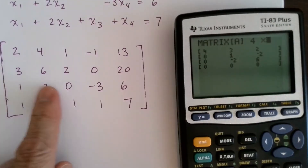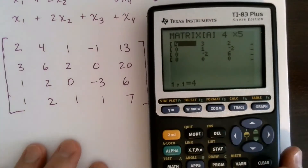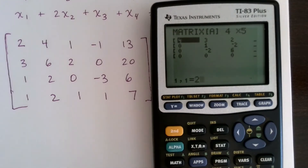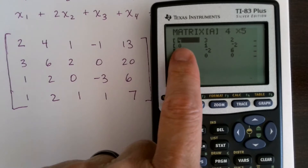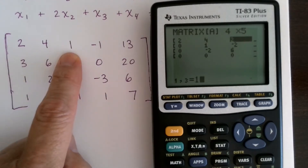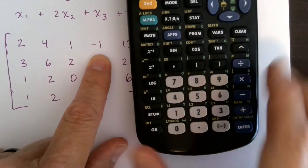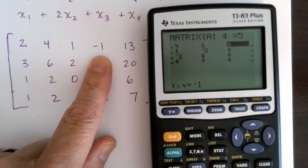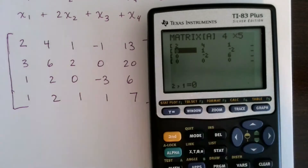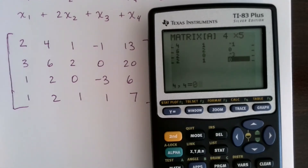Set the size of the matrix. The first number is the number of rows — there are four rows, so type 4 and enter. Then the number of columns is 5, so type 5 and enter. Then enter in the values. When you type 2, it appears, and you hit enter to confirm and shift to the next entry. So: 4, enter, 1, enter, negative 1 — make sure you use the negative sign — and 13, enter. It scrolls down to the second row, and we continue: 3, 6, 2, and so on.